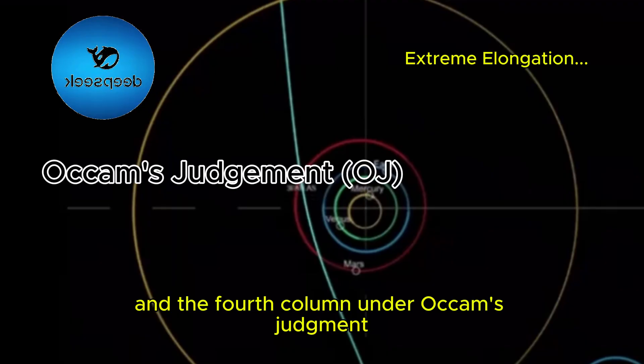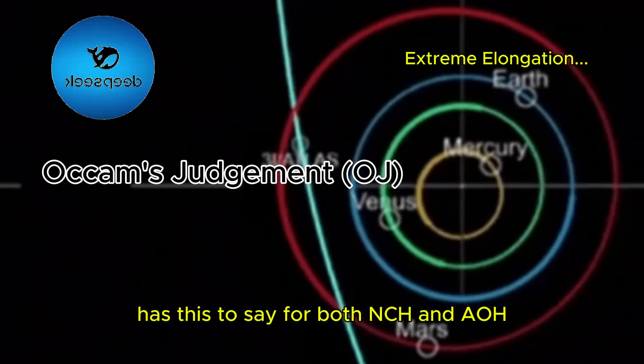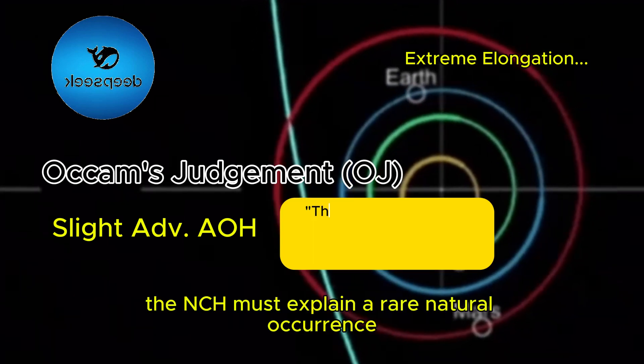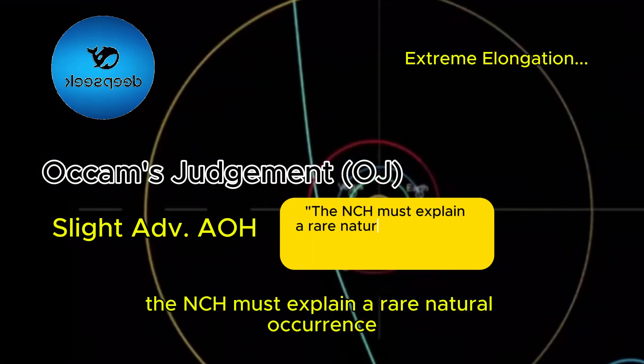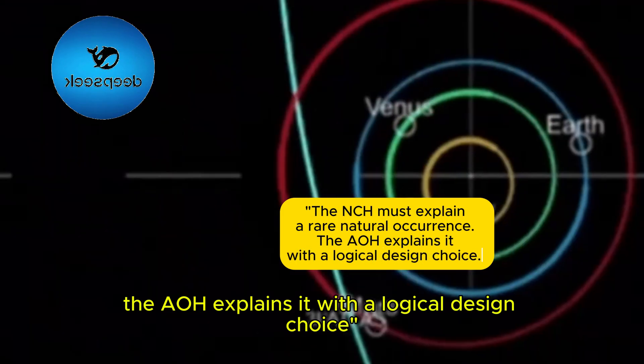And the fourth column under Occam's judgment has this to say for both NCH and AOH: Slight Advantage, AOH. The NCH must explain a rare natural occurrence. The AOH explains it with a logical design choice.